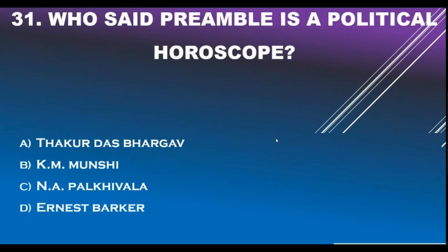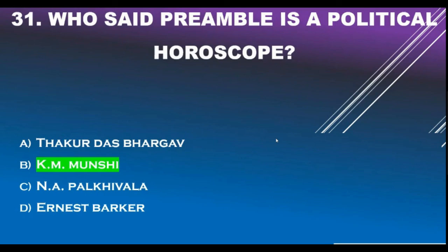Question number 31. Who said the Preamble is a 'political horoscope'? Option A - Thakurdas Bhargav. Option B - K. Munshi. Option C - N.A. Palkiwala. Option D - Ernest Barker. Correct answer is Option B: K. Munshi.